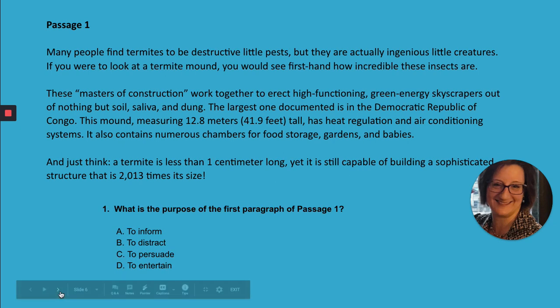A question you might see on the exam: what is the purpose of the first paragraph of passage one? Here we're being asked not about the entire passage, but just the first paragraph — those first two sentences. Let's look at the answer choices. I notice a red flag: I know there are only three reasons why an author might write — to persuade, to inform, and to entertain. Notice those appear in PIE order, but that's not necessarily how they'll appear in the answer choices. What isn't part of the acronym PIE is answer choice B — 'to distract.' Distracting the reader is not generally a reason an author writes a passage, so I cross that off my list right away.